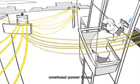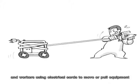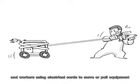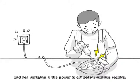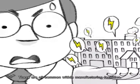Overhead power lines, wet work areas, and workers using electrical cords to move or pull equipment and not verifying if the power is off before making repairs are all common within manufacturing facilities.